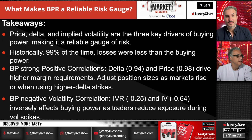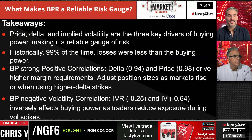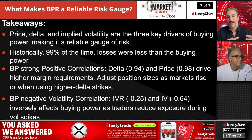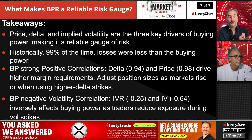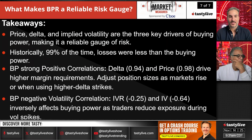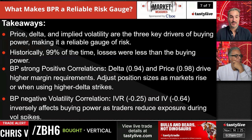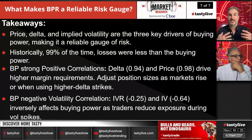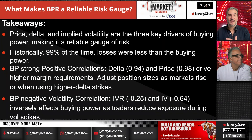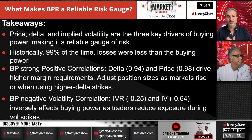Key takeaways: price, delta, and implied volatility are three key drivers of buying power, making it a reliable gauge of risk — though risk is dynamic and buying power will change with market conditions. Historically, about 99% of the time, max losses from naked puts were less than the buying power on entry. Buying power has a strong positive correlation with delta and price, and a negative correlation with volatility — as volatility expands, buying power increases; as it contracts, buying power decreases.